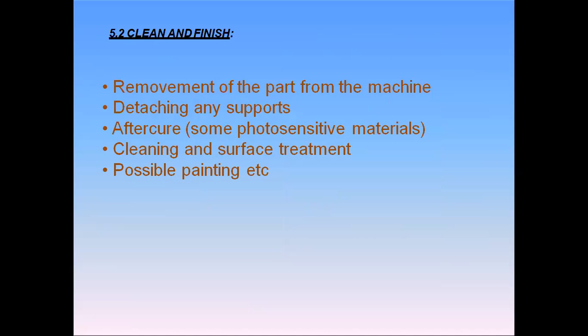The last step is clean and finish. When the 3D model or product is made, we remove the part from the machine, then detach any support material if it was used. We apply after-cure if photosensitive material was used to manufacture the part, then clean and perform any surface treatment if required, and complete painting if the object is to be painted. These are the five main steps in any rapid prototyping process.